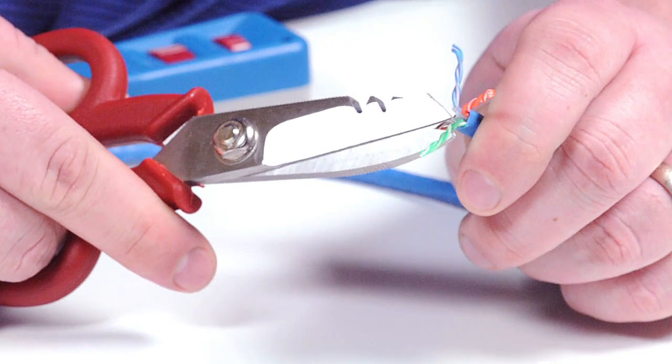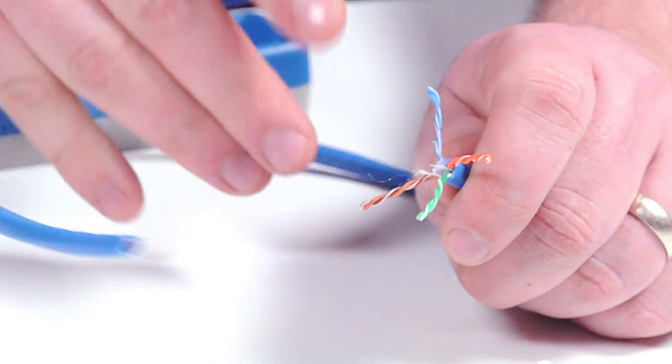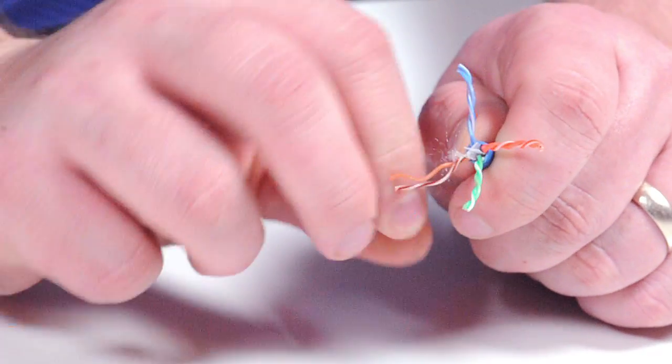Then you'll find a piece of string. Cut that off with your technician scissors. Then, untwist the four color-coded pairs so you'll end up with 8 conductors or 8 wires.